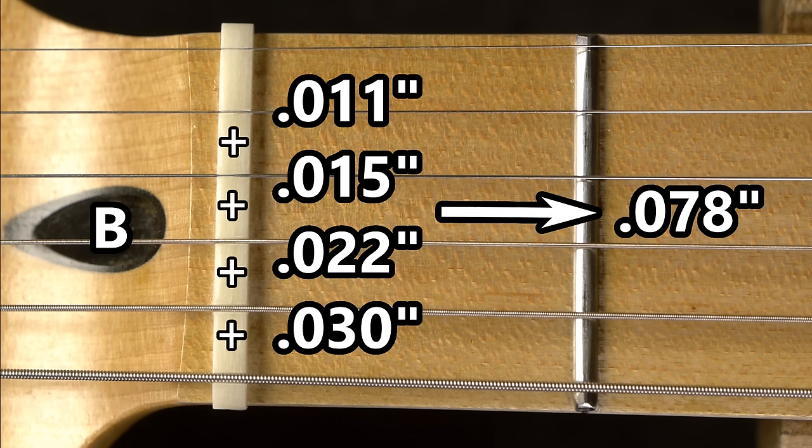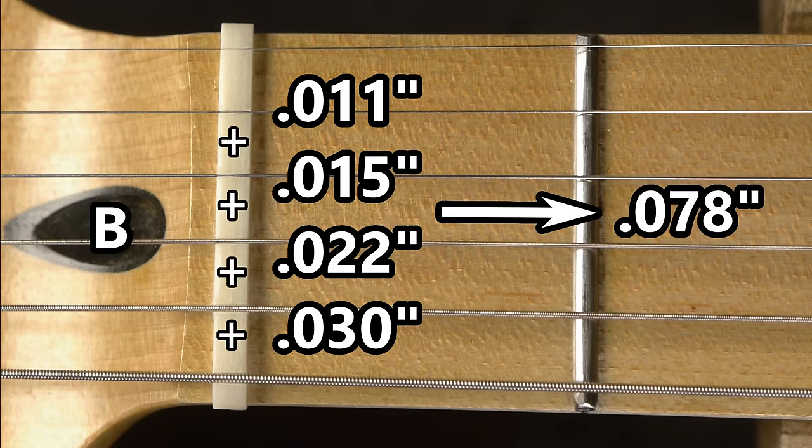To find B, add the individual diameters of the inner strings together. In this case, we have four inner strings, measuring 30 thousandths for the A string, plus 22 thousandths for the D string, plus 15 thousandths for the G string, plus 11 thousandths for the B string. That all adds up to 78 thousandths for B.